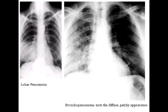Lobar pneumonia has a sudden onset with high-grade fever, whereas bronchopneumonia is insidious with low-grade fever. Lobar pneumonia causes consolidation of the whole lung, whereas bronchopneumonia produces patchy pneumonic consolidation.